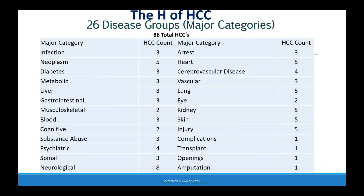There are 26 major disease groups that break out into 86 total HCCs. Infection has HCCs 1, 2, and 6. Neoplasms have five HCCs. Diabetes has three HCCs — uncomplicated, complicated chronic, and complicated acute. Some categories only have one HCC, such as complications, transplants, openings, and amputations — so there is no hierarchy within those single-HCC categories. If a diagnosis fits that HCC, it counts.